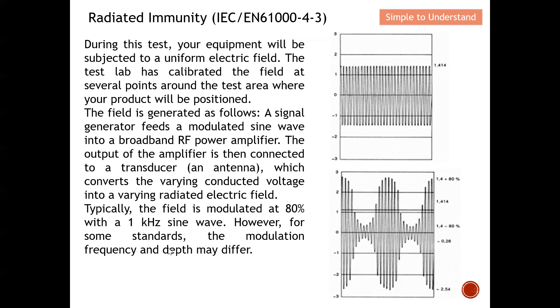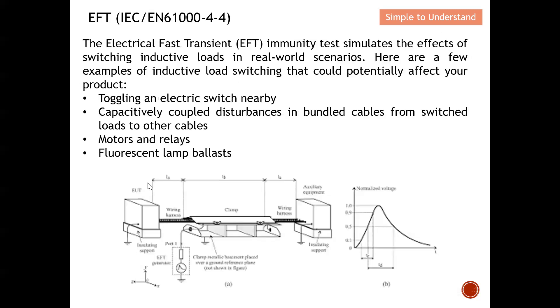Next is EFT, electrical fast transient. This immunity test simulates the effect of switching inductive loads in real world scenarios. Here are a few examples of inductive load switching that could potentially affect our device: toggling an electric switch nearby, capacitive coupling disturbance in bundled cables from switched loads, motors, relays, and fluorescent lamp ballasts.